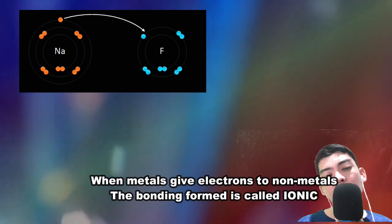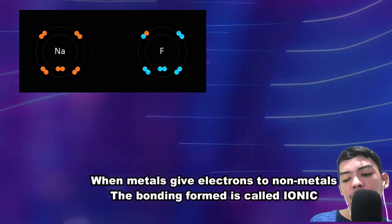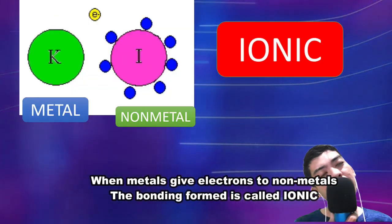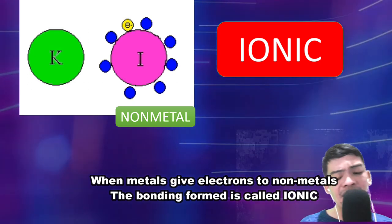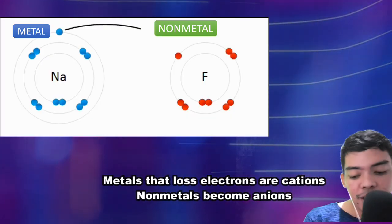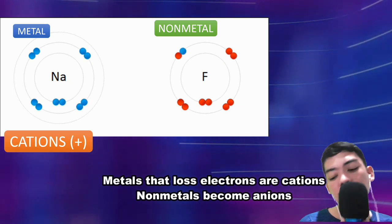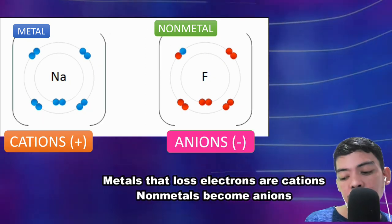When metals give electrons to non-metals, the bonding is called ionic. Metals lose electrons to become cations, and non-metals become anions.